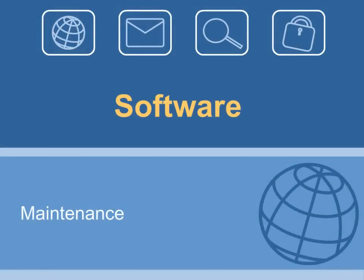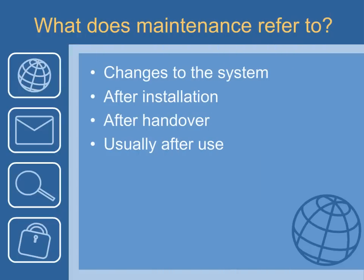To finish off this subject of systems life cycle, we come to maintenance, the final part. Maintenance really refers to things that go on after the system has been installed. We've gone through all these processes, got to the stage where we've actually put the system in place, got people using it within the organisation, and then things develop that mean the system has to be changed. You could say 'running repairs' is a good way of looking at it, but that's only one aspect of it.